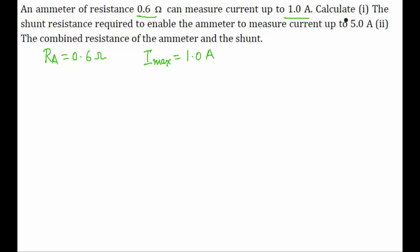It is asking to calculate the shunt resistance required to enable the ammeter to measure current up to 5 ampere and the next part it is asking to calculate the combined resistance of the ammeter and the shunt.